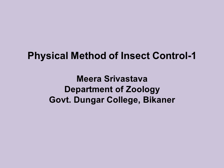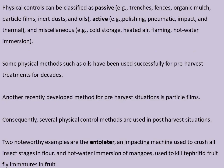To start with, the number one method is the physical method of insect pest control. Physical controls can be classified as passive — that means use of trenches, fences, organic mulch, particle films, inert dust, and oils — and active, that is using polishing, pneumatic impact, and thermal methods, and some miscellaneous ones such as use of cold storage, heated air, flaming, hot water immersion, and so on.